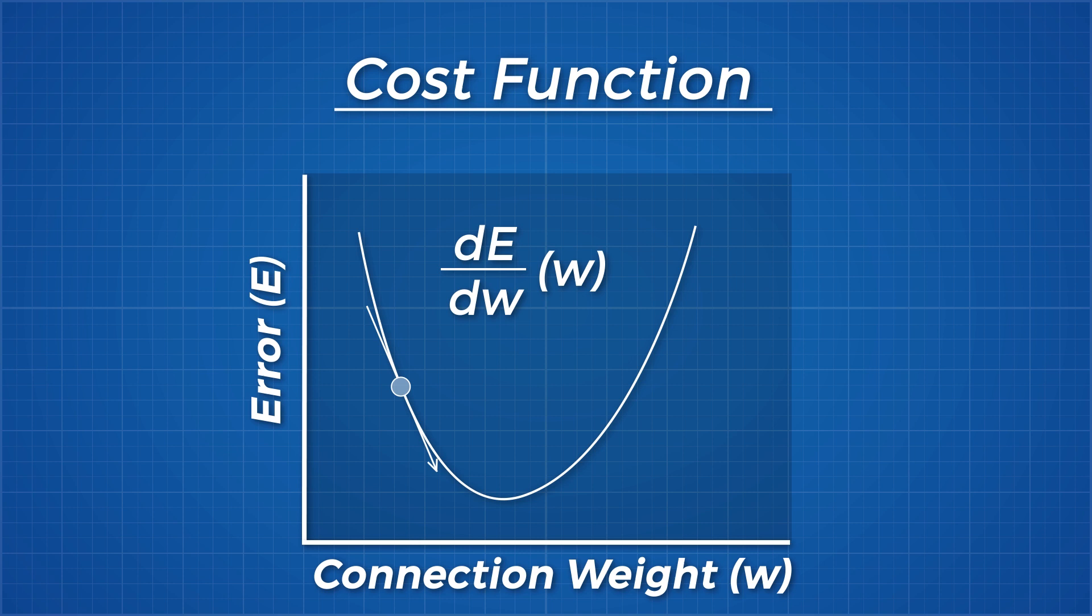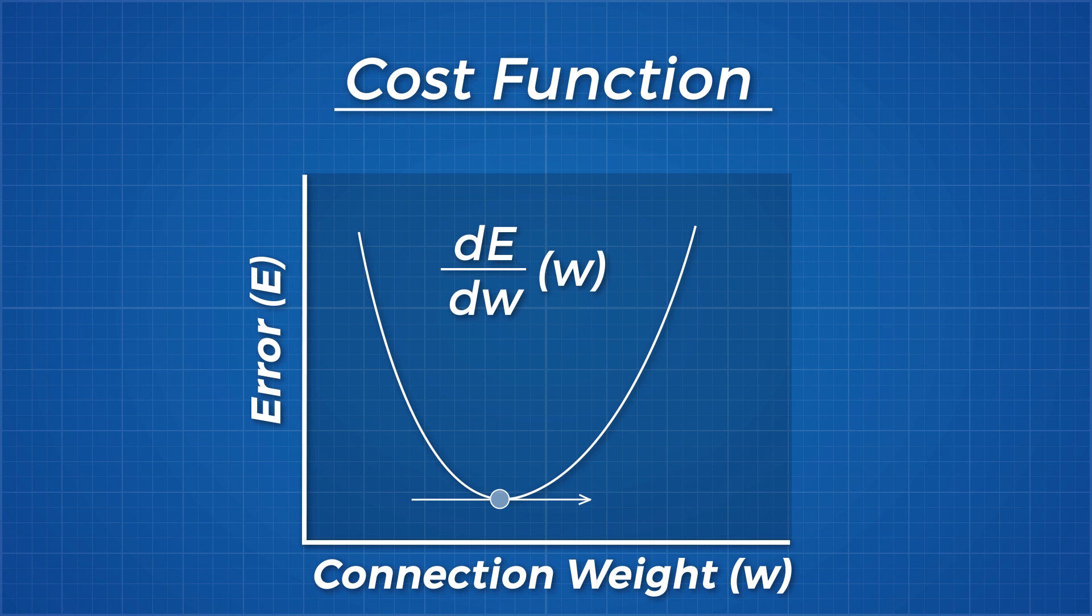However, this shows the cost function plotted against just one weight. In a real model, we don't look at the error value for each separate connection and weight. We want to know about the error across all connections.